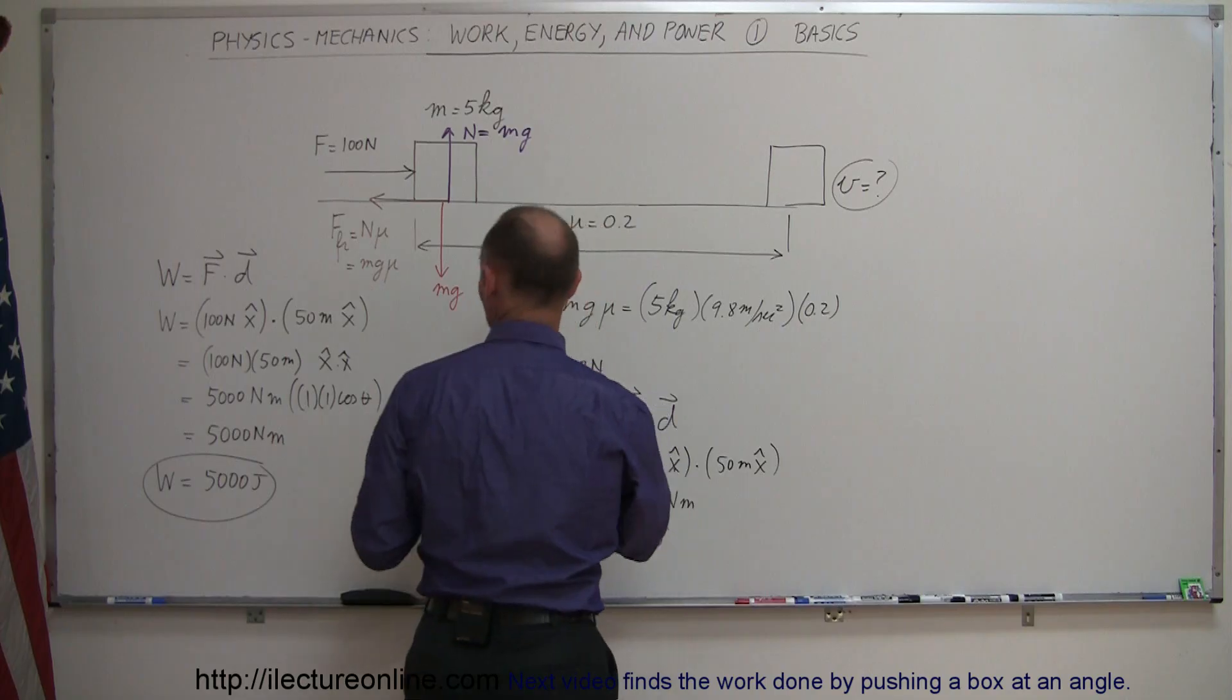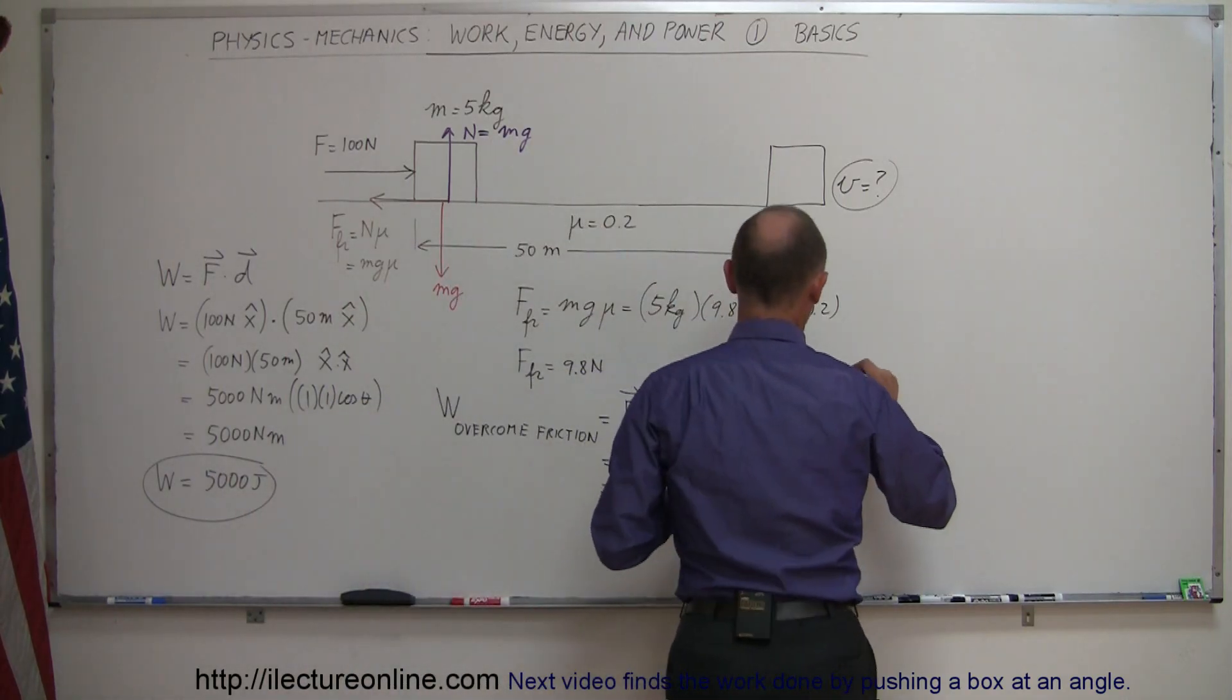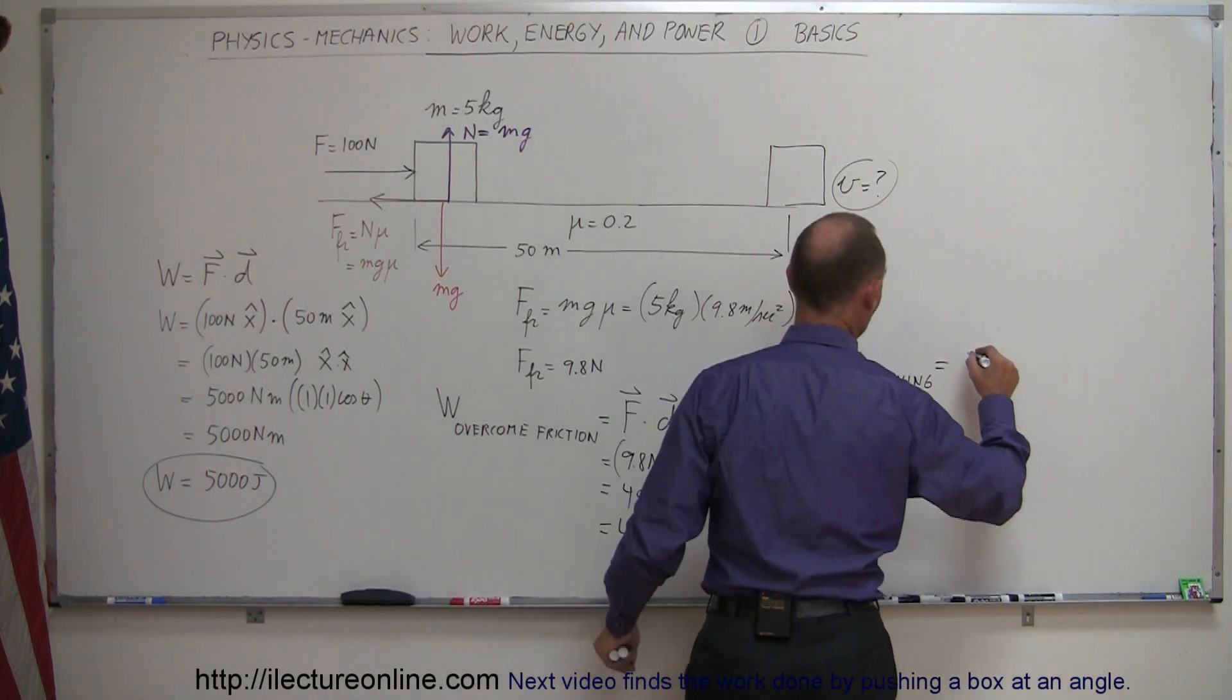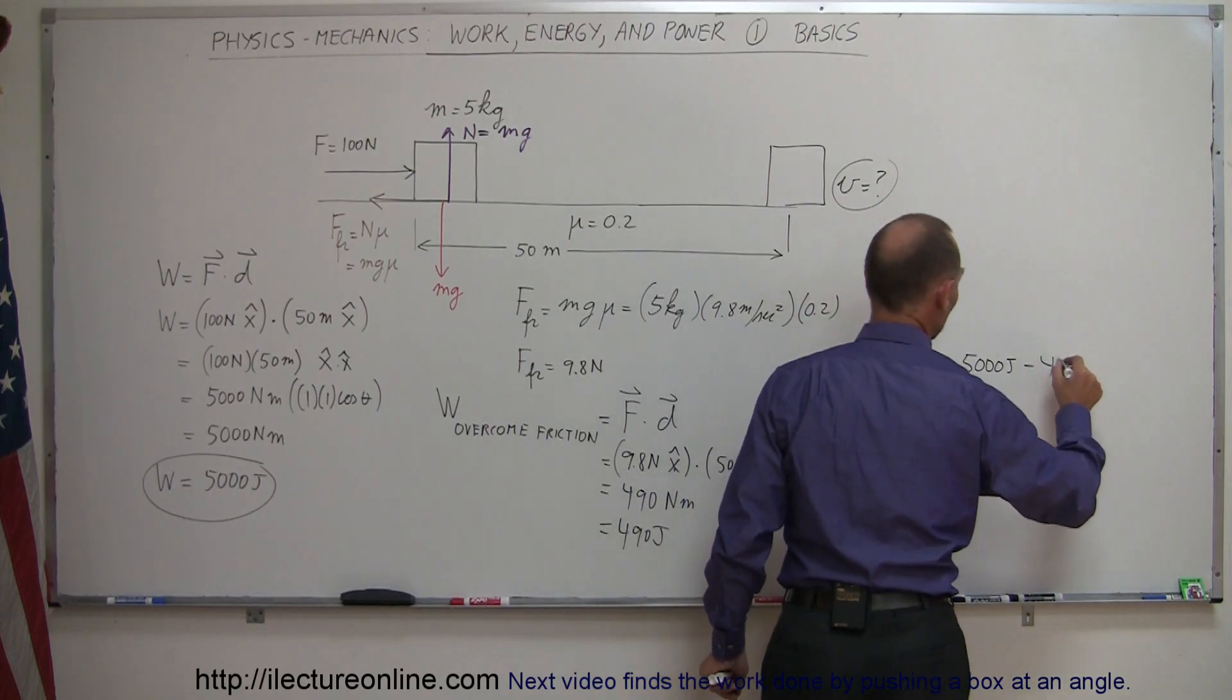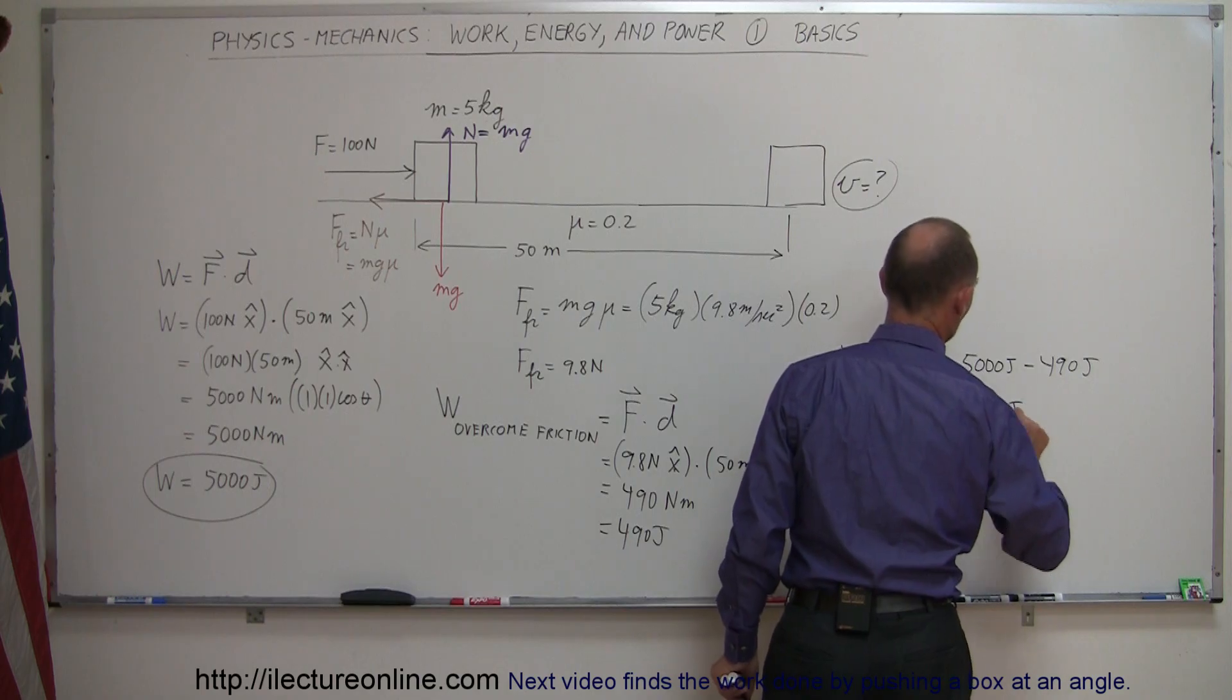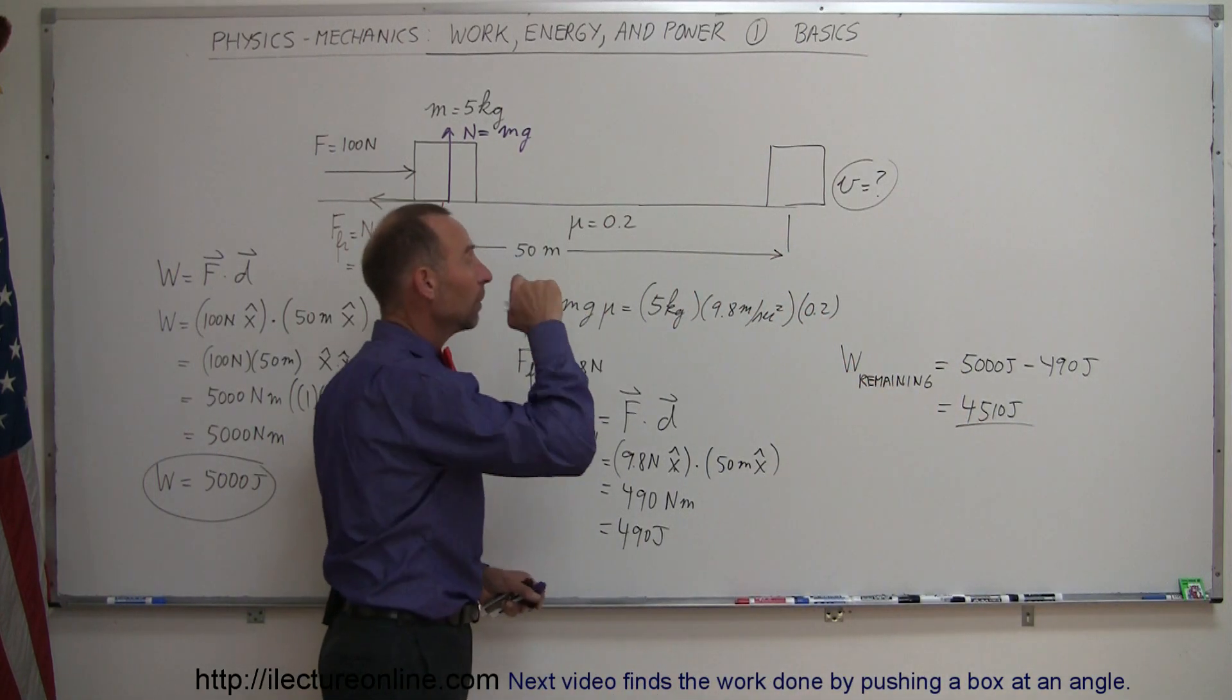And so what happens then is the remaining work, so W remaining is equal to the 5,000 joules of work we put into the block minus the 490 joules that we lost to overcome friction, so it's going to be 4,510 joules is remaining, and that work is then used to put energy into the block.